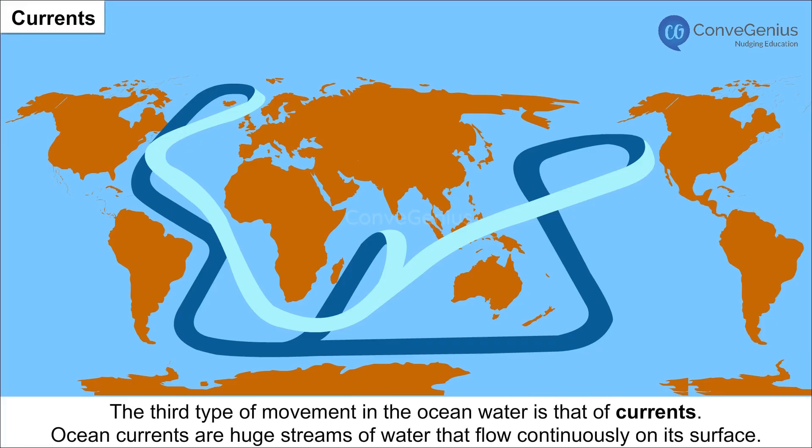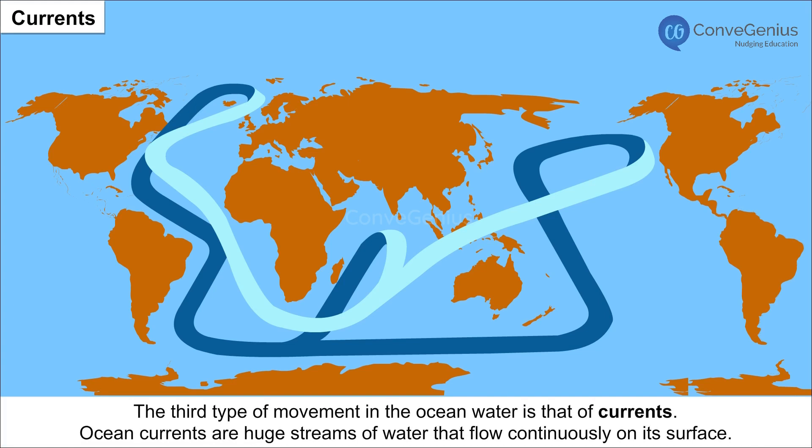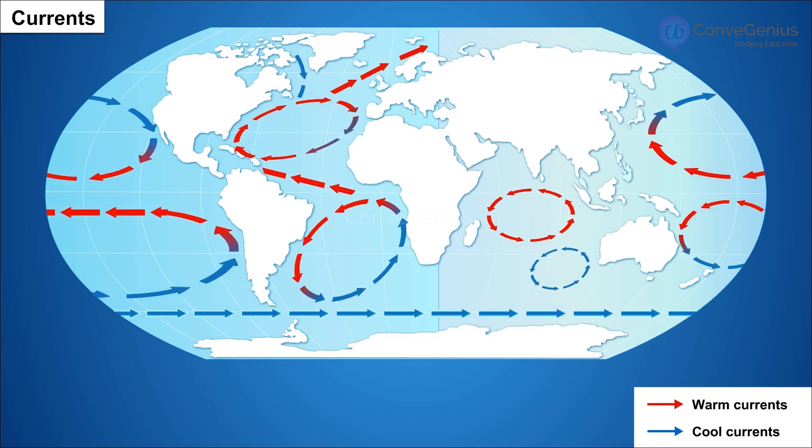Currents: The third type of movement in the ocean water is that of currents. Ocean currents are huge streams of water that flow continuously on its surface. The warm currents flow from the equator region to the poles, that is from higher temperature to lower one.